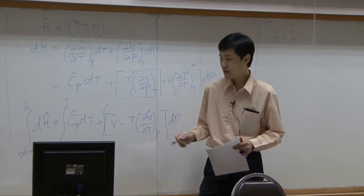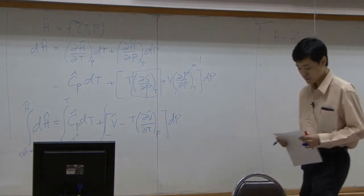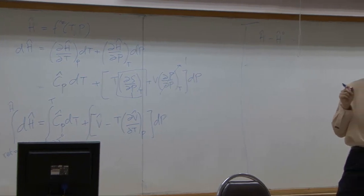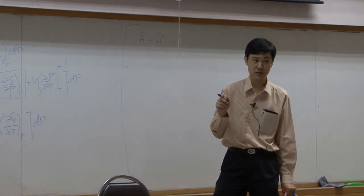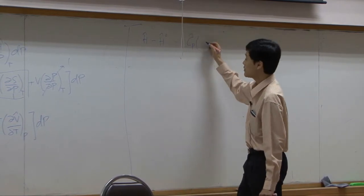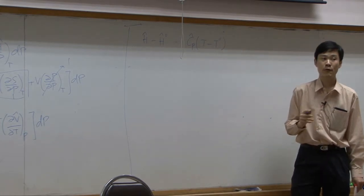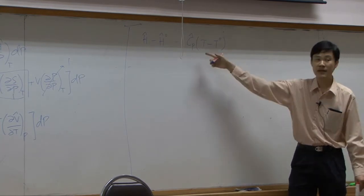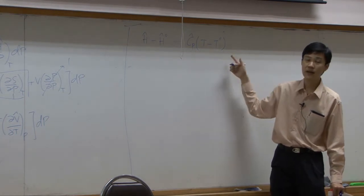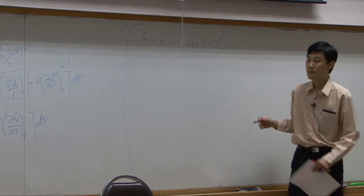The first term, integration of CP dT, you integrate it from reference state to temperature of the system, the temperature of reference T0. If you assume that CP is constant with respect to temperature, not a function of temperature, then you can simply take CP out and you have T minus T0. If you take the thermodynamics CP as a function of temperature, then you plug in CP as polynomial and integrate it later.